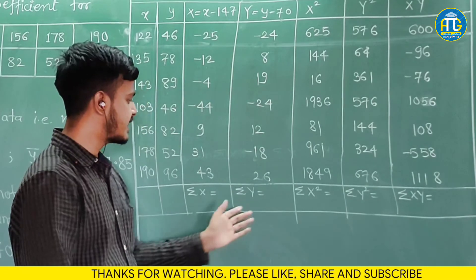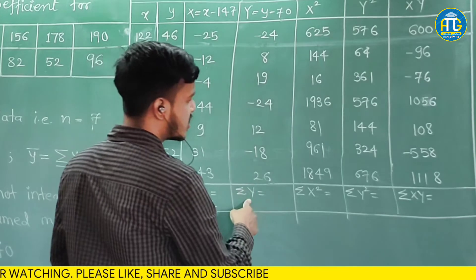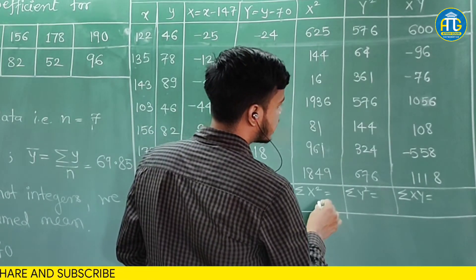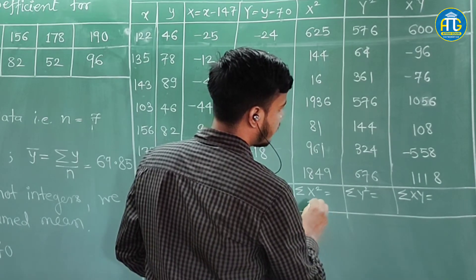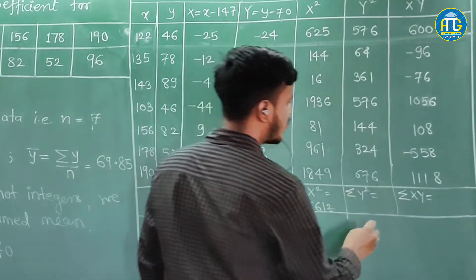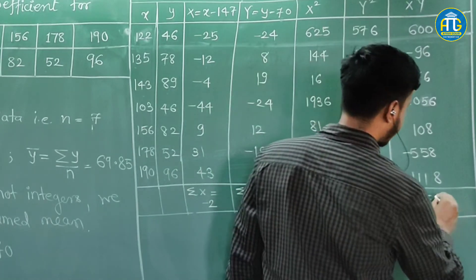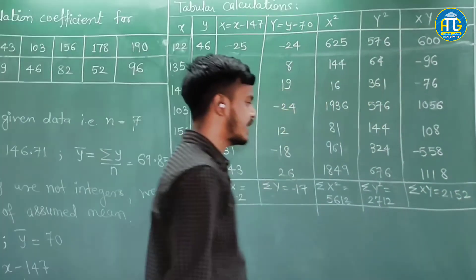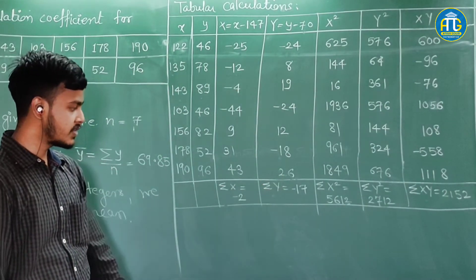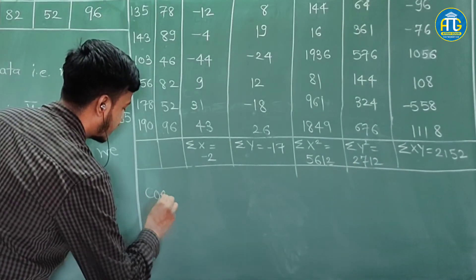I hope you have done these calculations. Summation X is −2; summation Y is −17; summation X² is 5612; summation Y² is 2712; and summation XY is 2152. After these tabular calculations, we are going to make use of the formula and find out the coefficient of correlation.